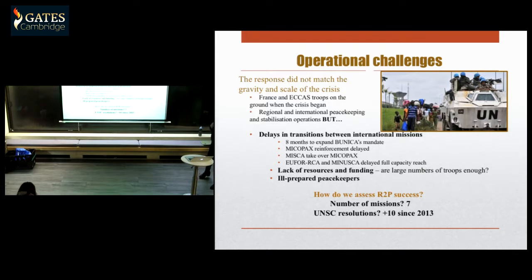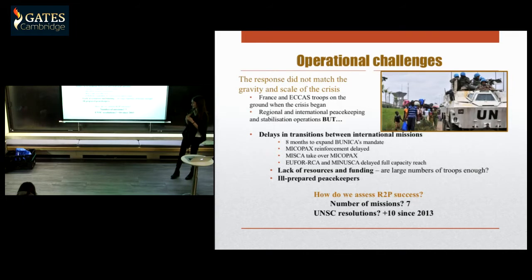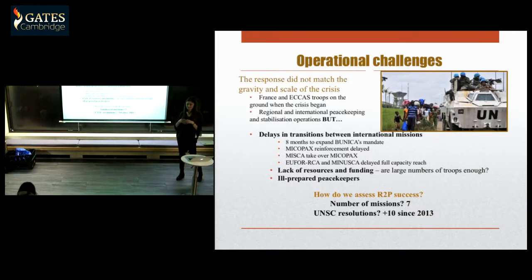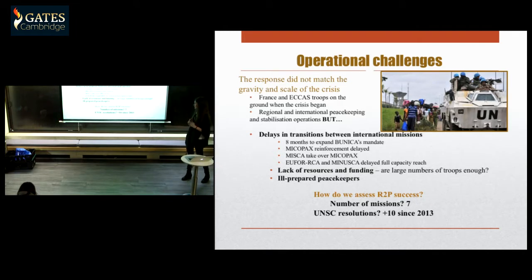Despite the delays in transition, there was also a lack of resources and funding. Although there were more than 12,000 peacekeeping troops on the ground from MINUSCA alone, this doesn't say anything about their capacity to implement their mandate. If you were to assess R2P success by the number of missions on the ground — seven at this time — you might say yes, there was success. But numbers don't say much about capacity.